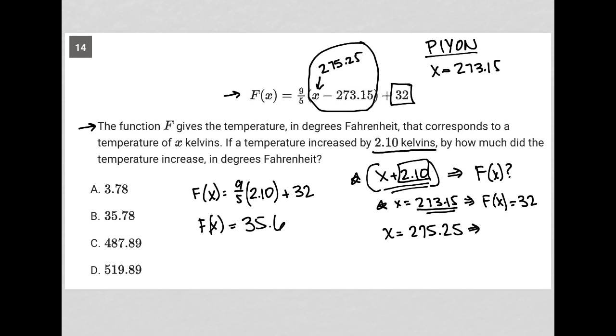So the question says, how much did the temperature increase? It went from 32 to 35.6. So that's a difference of 3.6. I don't see 3.6. I see 3.78. So I wonder if I made a small error somewhere.